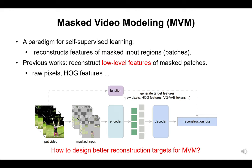However, existing masked video modeling methods pre-train models by reconstructing low-level features like raw pixel values, HOG features, or low-level VQVAE tokens. These reconstruction targets contain much noise, and models may learn shortcuts due to the high redundancy in video data.